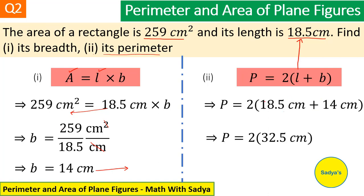Now 14 plus 18.5 is 32.5 cm and when we multiply it with 2, we get 65 cm. So, perimeter of the rectangle is 65 cm.